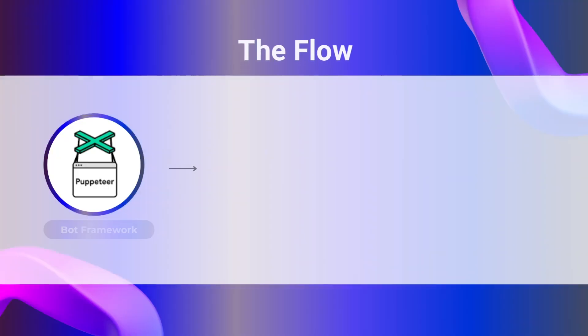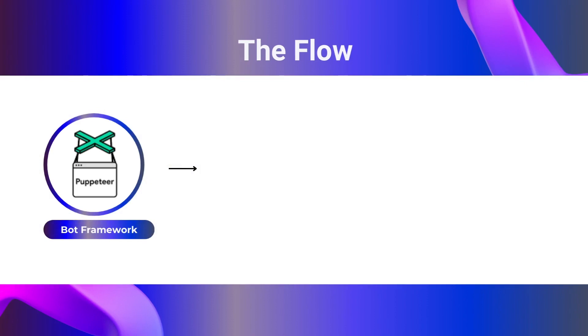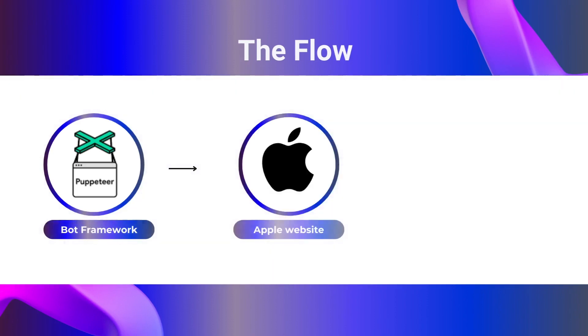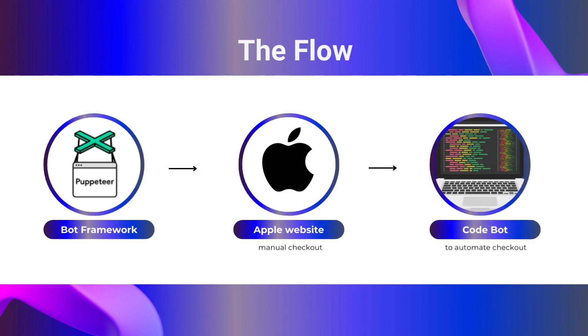This is how the flow is gonna work. First, we're going to find a browser manipulation framework that lets us act like a user using code, which will be the basis of the bot. Then we're gonna go through the Apple website manually to understand how a common checkout works for an iPhone, simulate that entire process using our framework and code, test it, refine it, and keep repeating until we finalize our product — and then we'll sell it to customers.